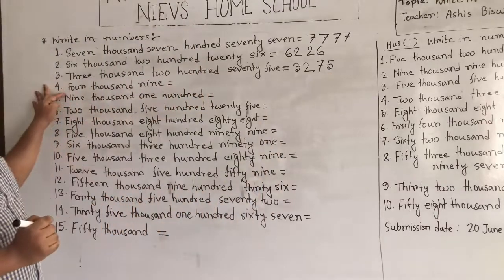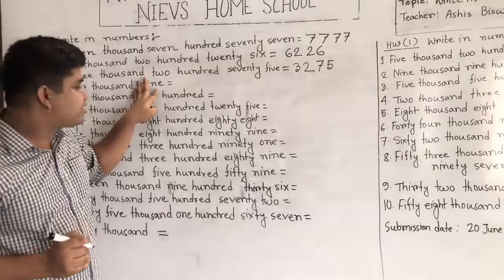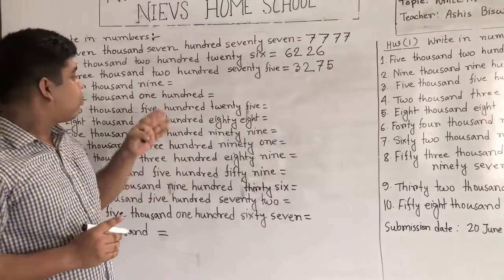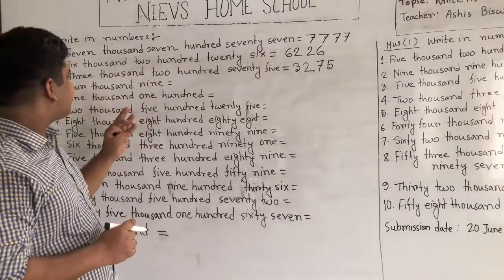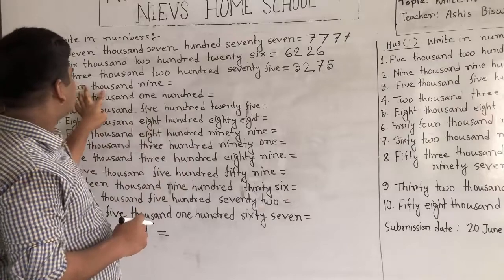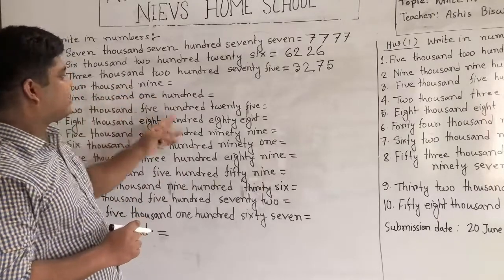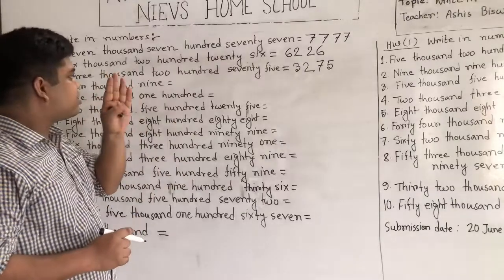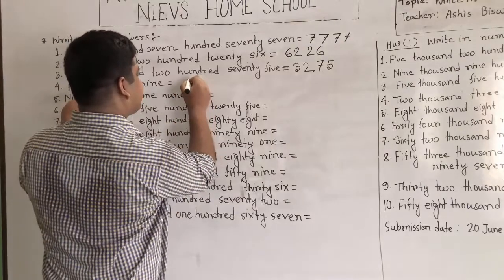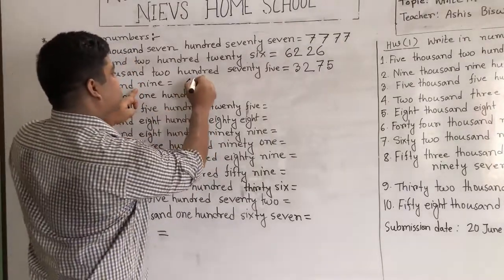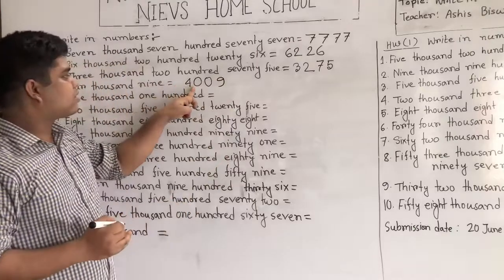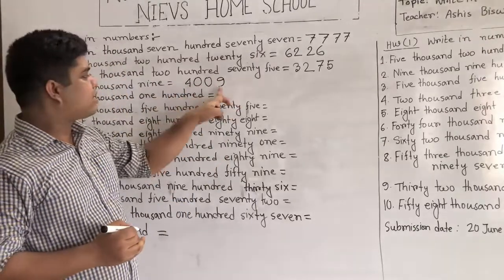Our next number is 4,009. Students, notice this: here the hundreds place and tens place are absent. When places between two present places are absent, those places must be 0. Here we have the thousands place and the ones place, but hundreds and tens are absent. So we give 0 for hundreds and 0 for tens. We write 4 first, then 0 for hundreds, 0 for tens, and 9. This is called 4,009.